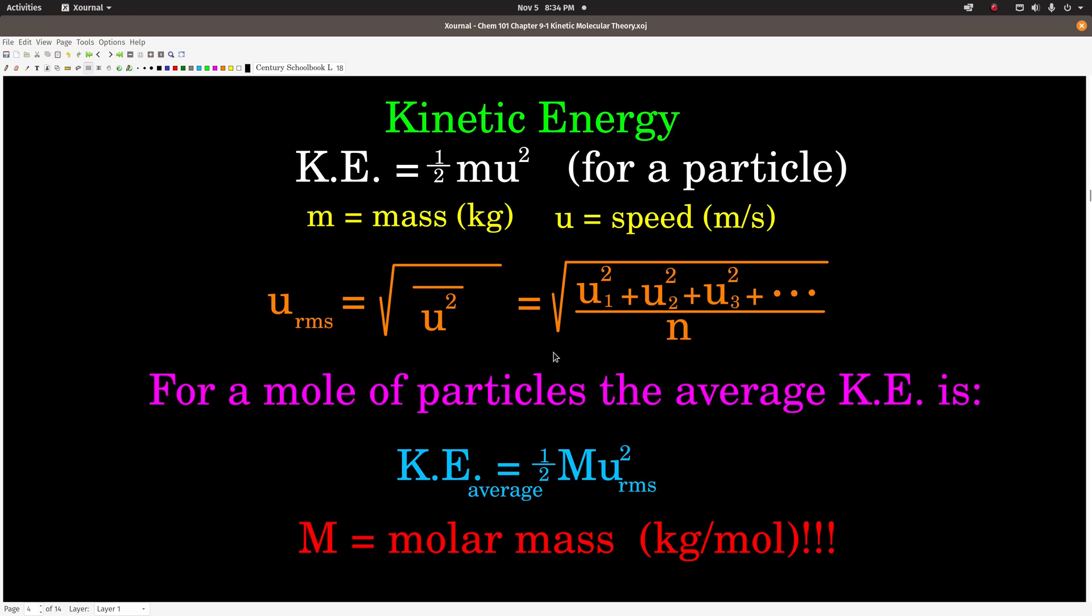We're going to talk about kinetic energy here for a minute. So remember, we've seen this before, kinetic energy is one-half mass times speed squared. So for a single particle it's just one-half the mass of that particle times the speed squared, where mass has to be in kilograms, speed in meters per second. So we end up getting kilograms meters squared per second squared, which is joules.